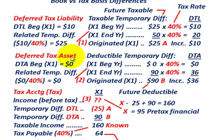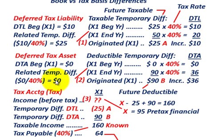Moving down to our deferred tax asset — in this case the beginning amount for the deferred tax asset is zero. So the related temporary difference at the beginning of the year, there isn't any. We start out with our deductible temporary difference for the deferred tax asset at zero dollars.